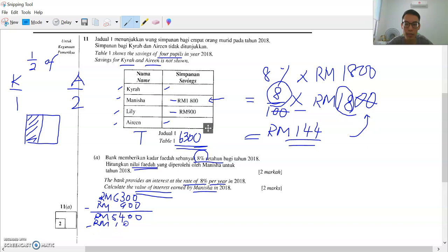RM6300 minus RM800. Then the balance you get RM3600. This RM3600 belongs to Irene's and Kaira's, belongs to Irene and Kaira.